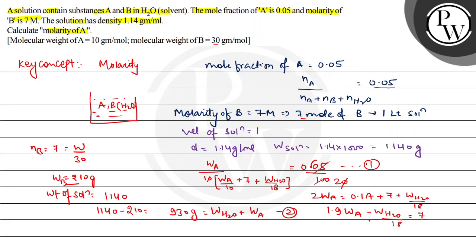If I write this, 1.9 into 18 gives 34.2. So 34.2 WA minus weight of H2O equals to 18 into 7, that is 126. Adding both equations: 1056 equals to 35.2 WA. From here, weight of A comes out to be 30 gram.